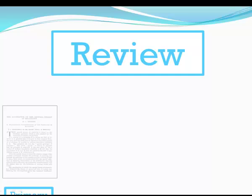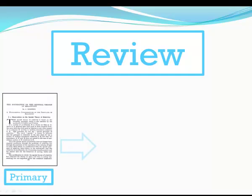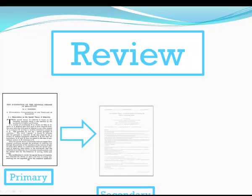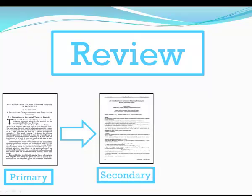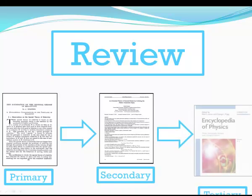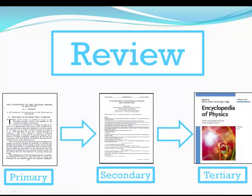If I was researching a physics topic, a primary source could be the paper 'The Foundation of the General Theory of Relativity' by Albert Einstein. A secondary source would be an article discussing this theory, and a tertiary source would consist of an encyclopedia entry on the theory of relativity.